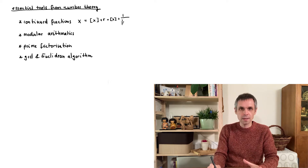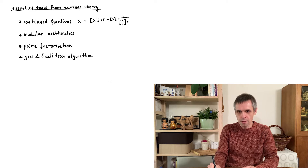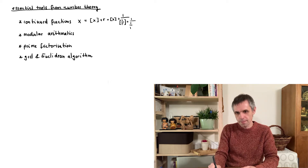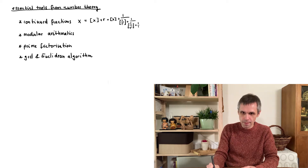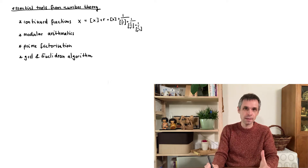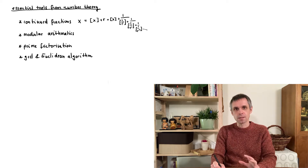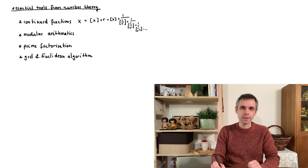Splitting off the integer part leaves a remainder, which we rewrite by putting it as its inverse into the denominator. We then treat this denominator as before by taking its integer part, yielding another remainder r', written in the same way. We just continue like this — always taking integer parts and putting remainders into the denominator — and this rapidly gives very accurate approximations of x.